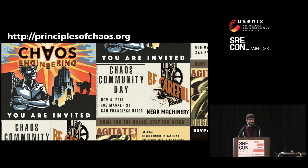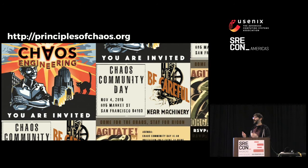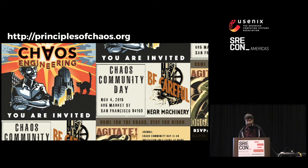We put those out there on principlesofchaos.org and saw good energy in the community, so we started developing the Chaos Community. We have a Chaos Community Day — two years ago we ran one in San Francisco, last year we ran one in Seattle. If you're interested in doing chaos engineering, go there and at the bottom you'll find a Google group for the Chaos Community, where you can join and see announcements for upcoming Chaos Community Days.